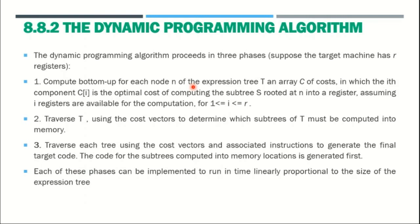The third phase is to traverse each tree using cost vectors. In the second phase we traverse each subtree; in the third phase we traverse each complete tree. Based on the cost vectors, we evaluate what instructions are needed and which final target code is generated. This code is a combination of several subtrees computed together. Finally, all information is copied into several memory locations and the registers are freed for use by any other dynamic program.